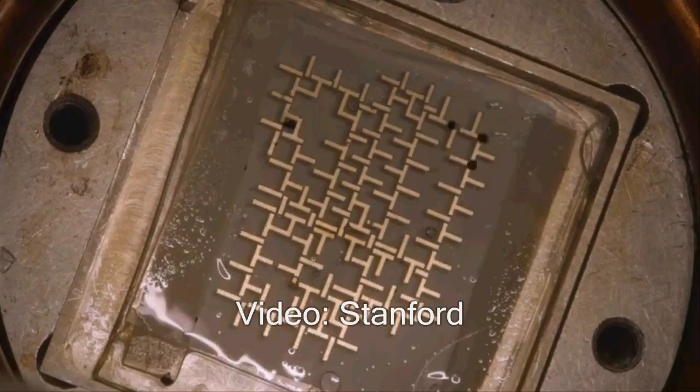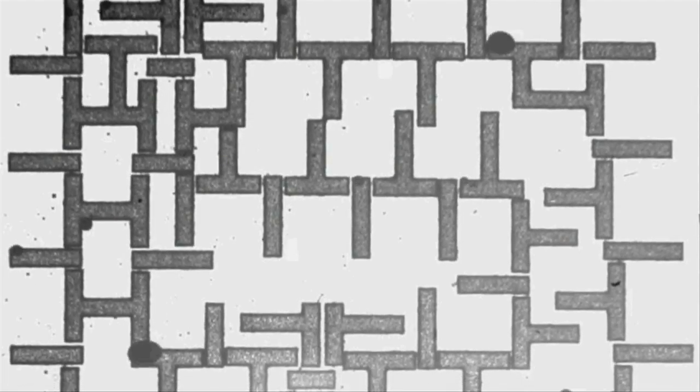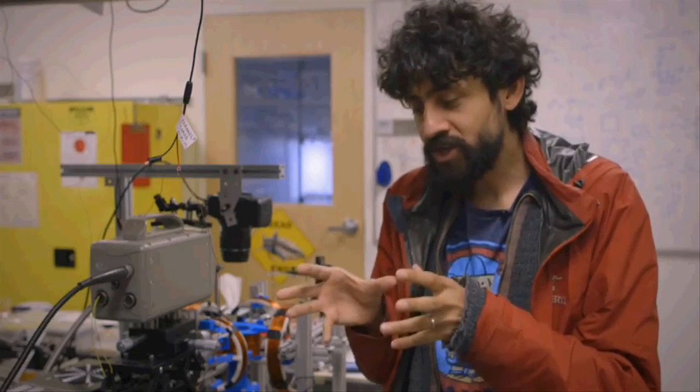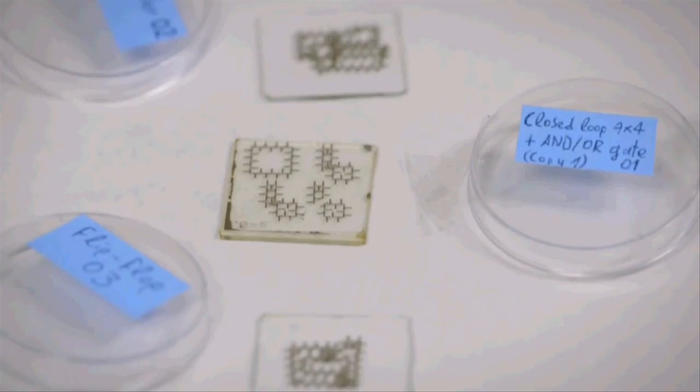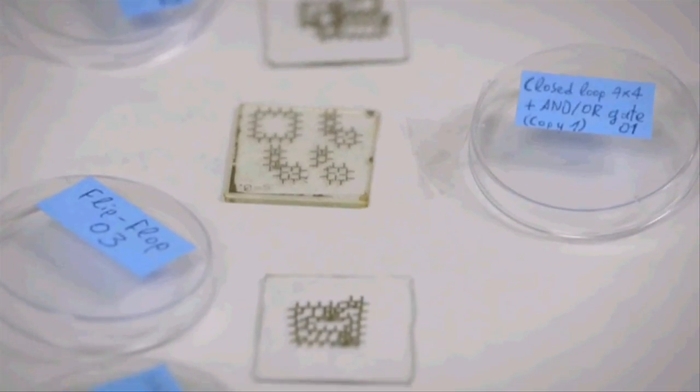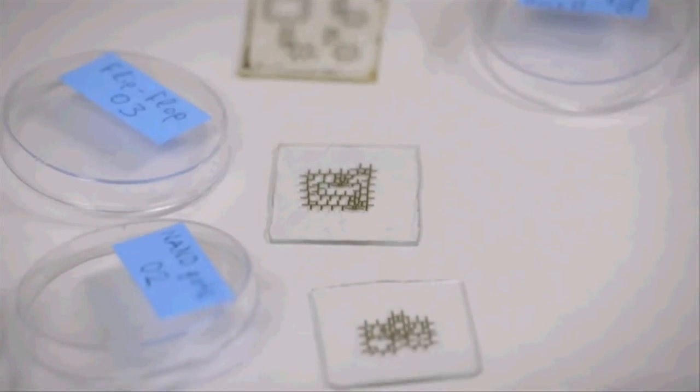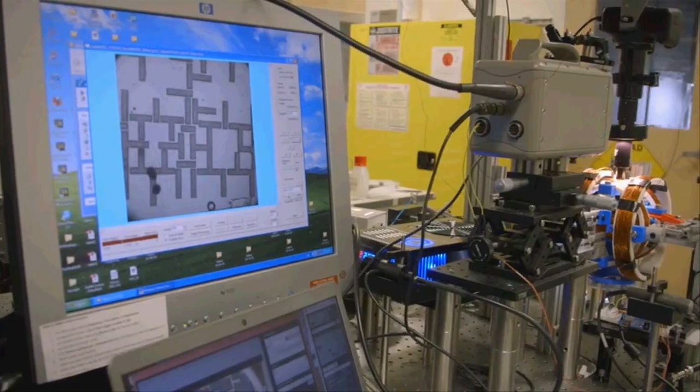All the way from a jacquard loom to the Babbage machines to the very early electronic computers, the fundamentals have been about manipulation of information. Computation and computers are bound by laws of physics, primarily because bits are physical entities. That notion implies that you can use computers to actually manipulate matter.